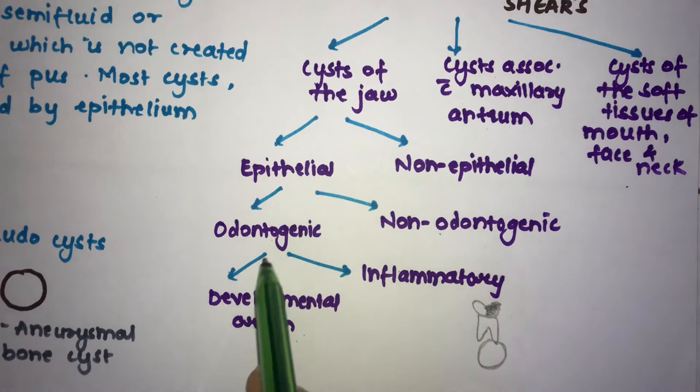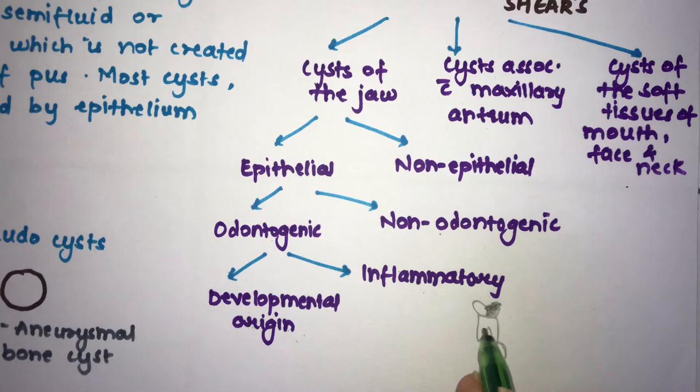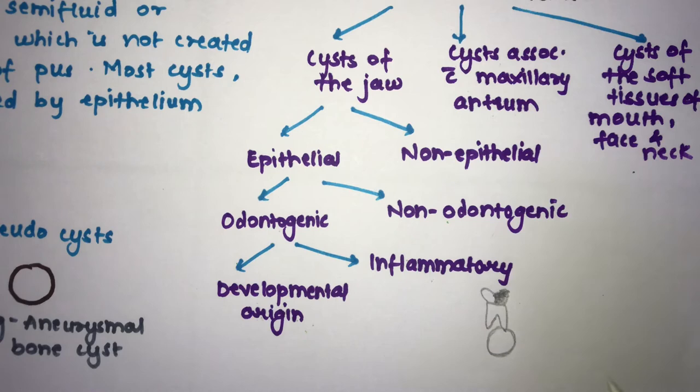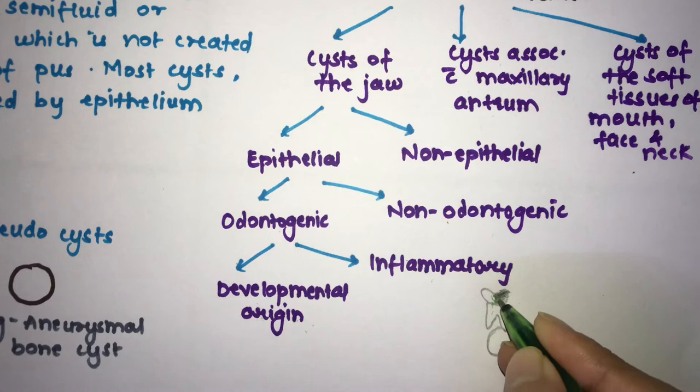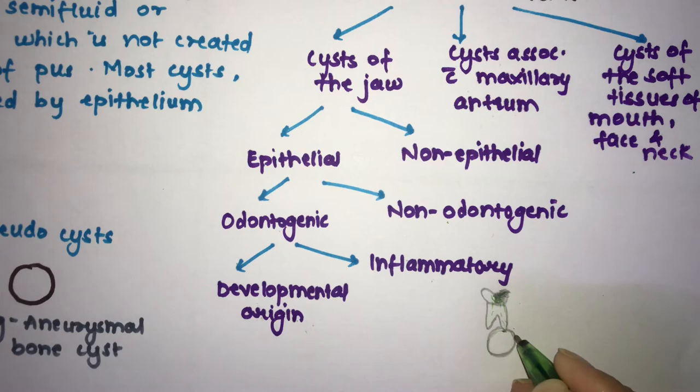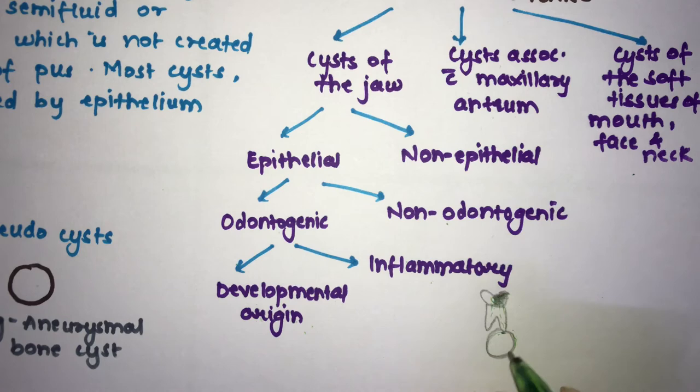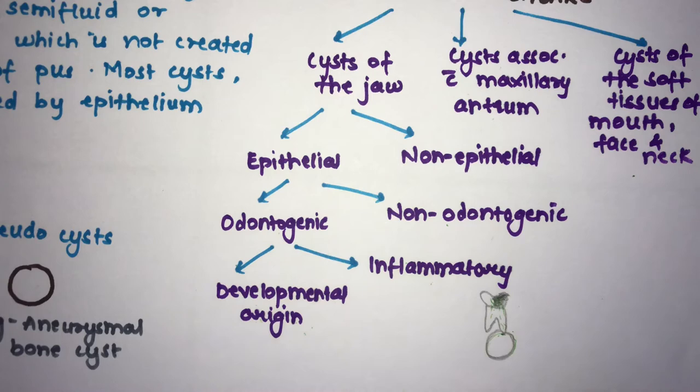Odontogenic cysts are divided into developmental and inflammatory. Inflammatory ones are caused by inflammation, such as from caries. Caries enters the pulp, and through the apical foramen it reaches the periapical area, leading to formation of a periapical cyst. Any cause other than inflammation falls under developmental origin.